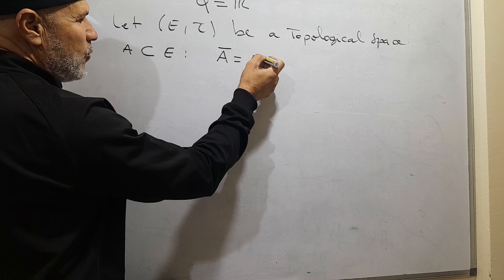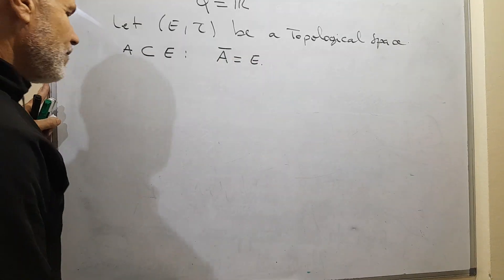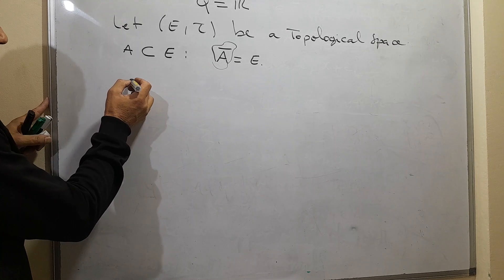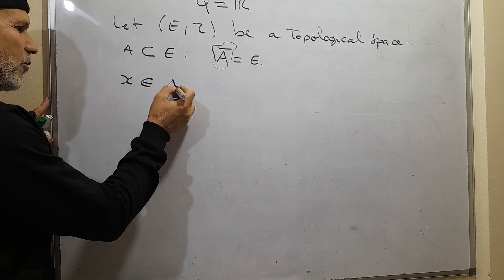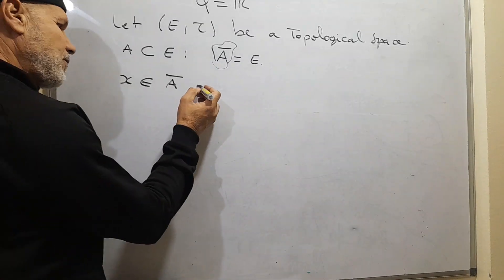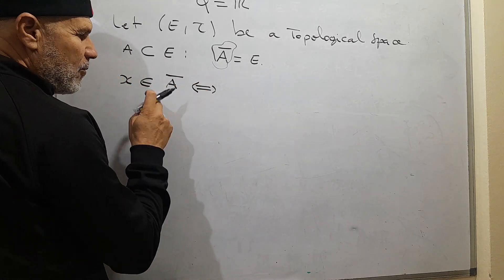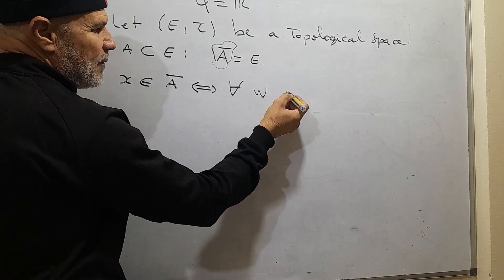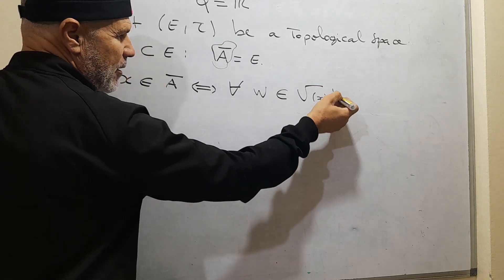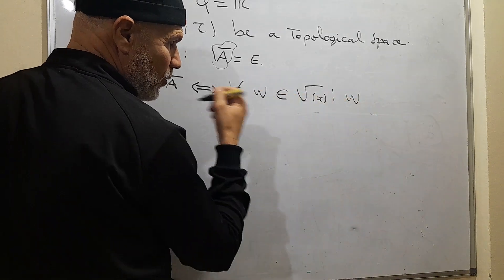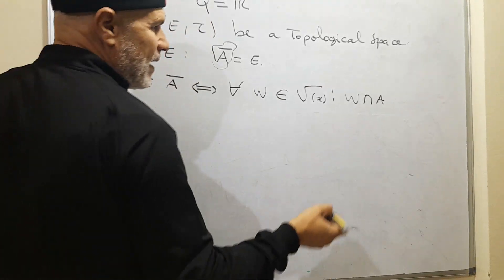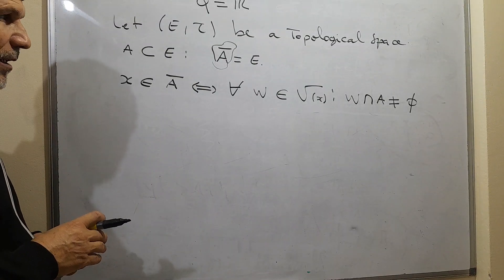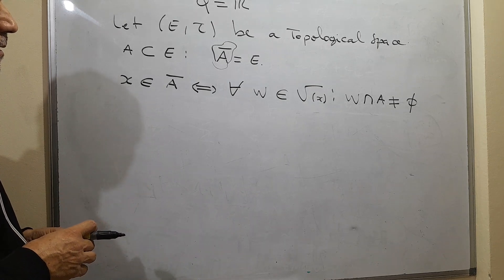What does this mean? We say that X belongs to the closure of A if and only if: for all neighborhoods W of X, we have that W intersected with A is different from the empty set. This definition is valid for the general topological space.